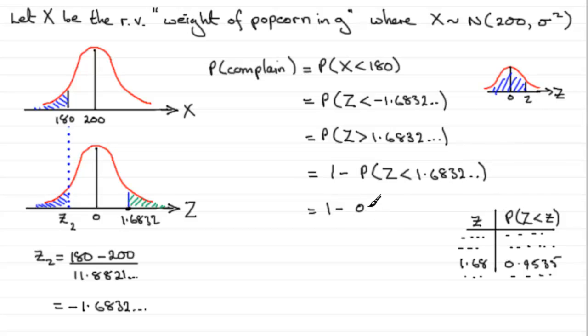So 1 minus 0.9535. And what does that give us? Well, it gives us 0.0465. And you can round that up if you like. Say, two, three decimal places. And you've got 0.047 to 3dp. And there you have it.